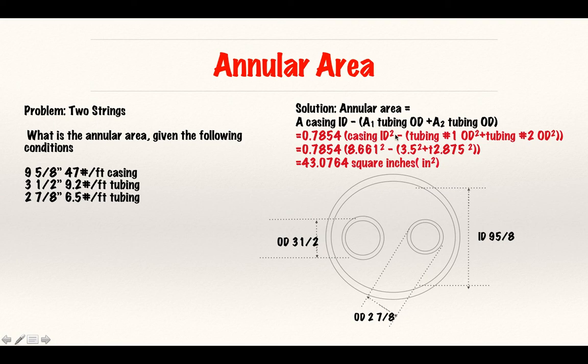We take the formula 0.7854 casing ID squared minus tubing number one OD squared plus tubing number two OD squared. Annular area is the space between this casing ID and this tubing OD and this tubing OD.